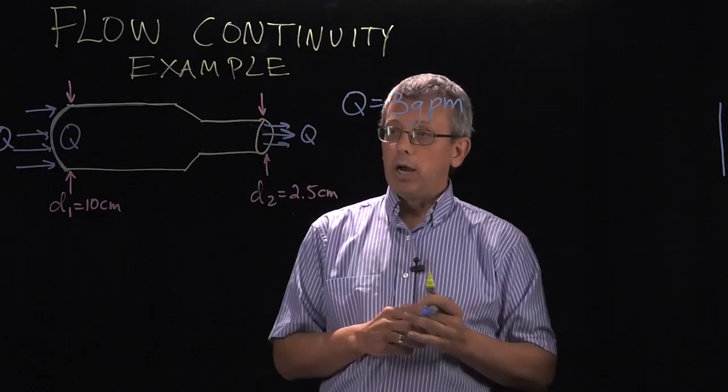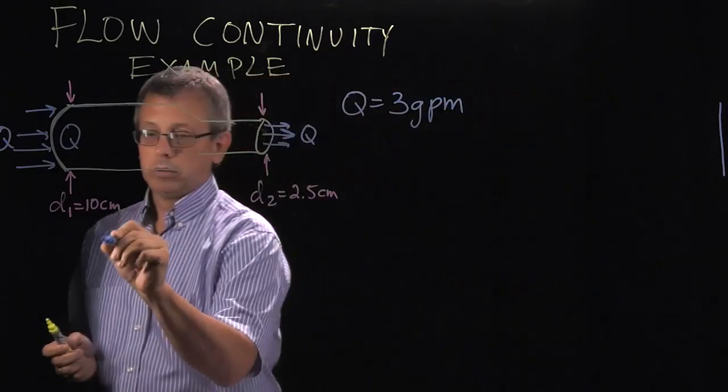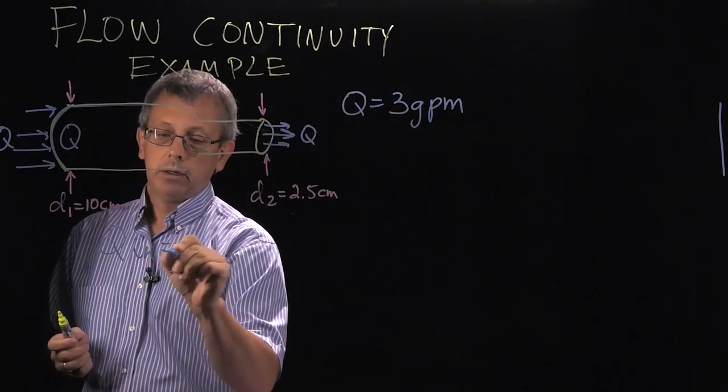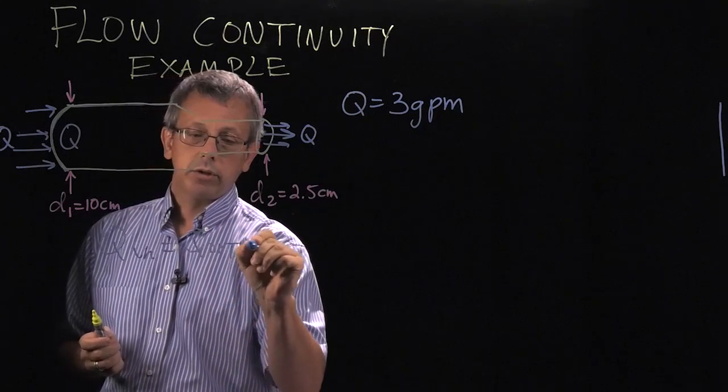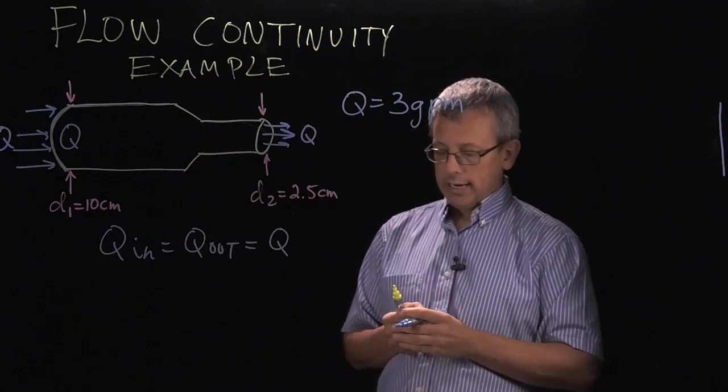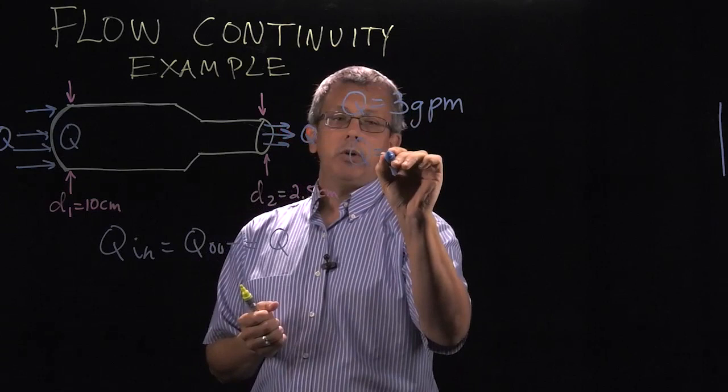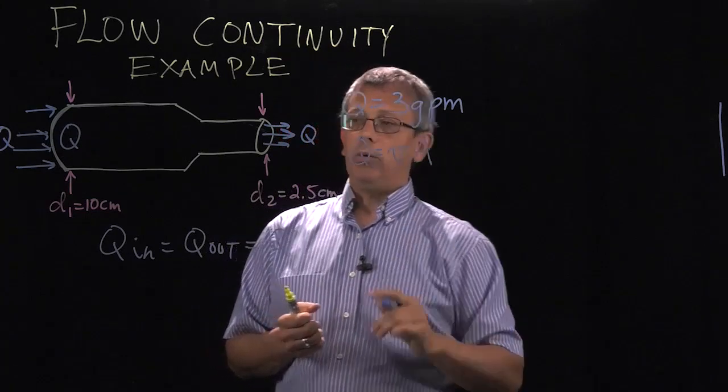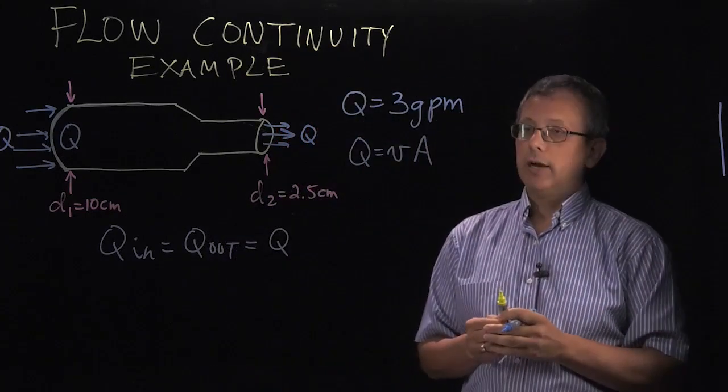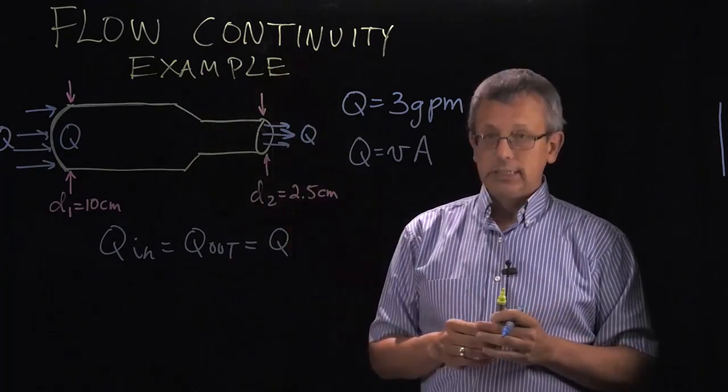So we assume continuity for these two things. If we do that, we know Q_in equals Q_out equals Q. It's the same flow in and out. But we can also use our relationship that Q is equal to VA, where V is the velocity